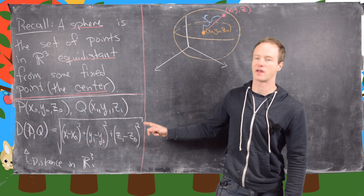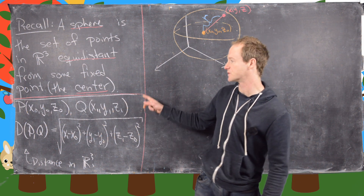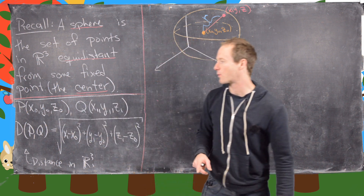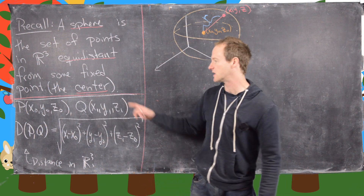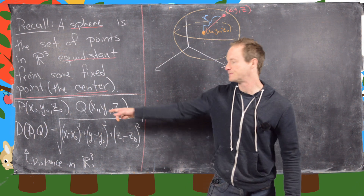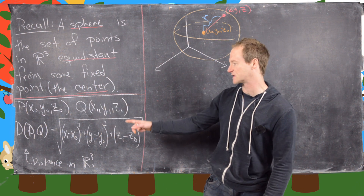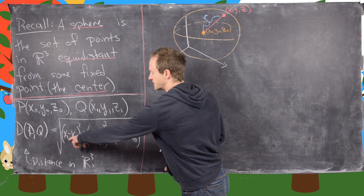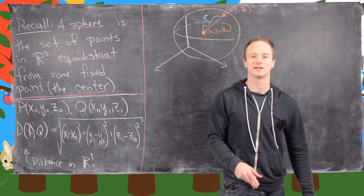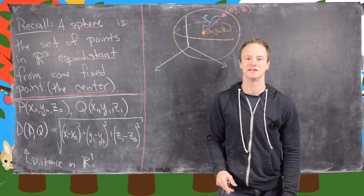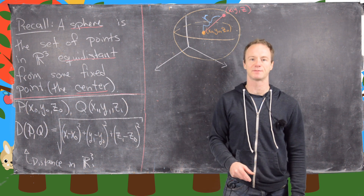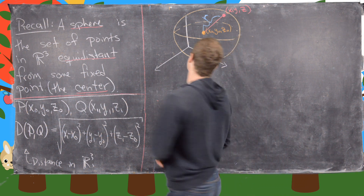Along the way, we'll use the following distance formula in three dimensions. If we let P be the point (x₀, y₀, z₀) and Q be the point (x₁, y₁, z₁), then the distance from P to Q is the square root of the difference in the x part squared, plus the difference in the y part squared, plus the difference in the z part squared. This follows directly from the Pythagorean theorem.